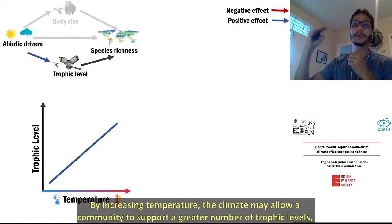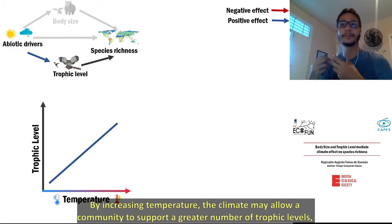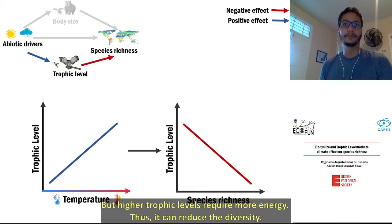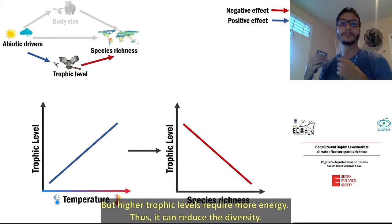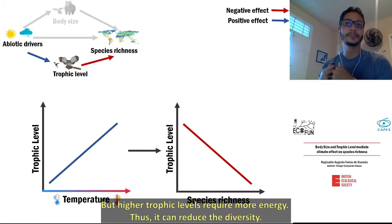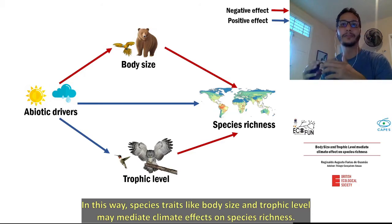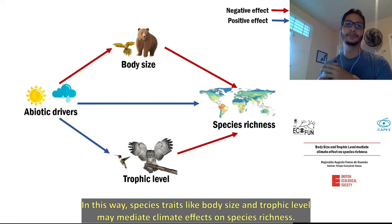By increasing temperature, the climate may allow a community to support a greater number of trophic levels. But high trophic levels require more energy, thus it can reduce diversity. In this way, species traits like body size and trophic level may mediate climate effects on species richness.